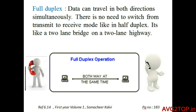Full duplex. Here, data can travel in both directions and there is no need to switch between transmitting and receiving modes — it's not like half duplex. You can send and receive both at the same time. A good example is two people having a telephone conversation, where they can send and receive both at the same time.